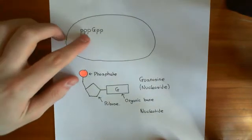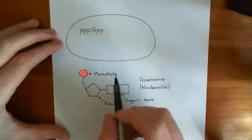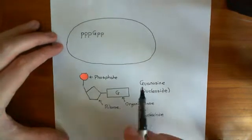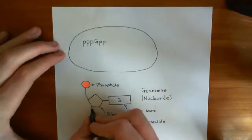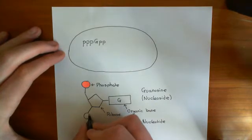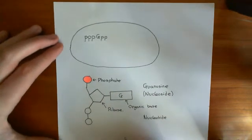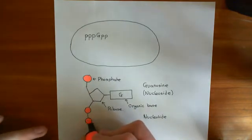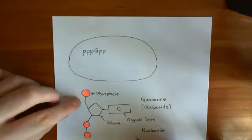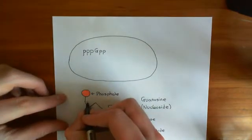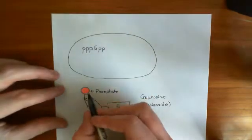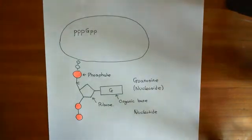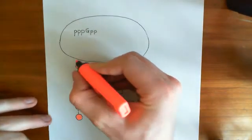So when I write pppGpp, what that means is a guanosine nucleoside — so guanine with the ribose sugar makes guanosine — and then with two phosphate groups off the third carbon, so two phosphate groups coming off the hydroxyl group of the third carbon of the ribose sugar, and then three phosphate groups coming off the fifth carbon up here. That is the structure of pppGpp.